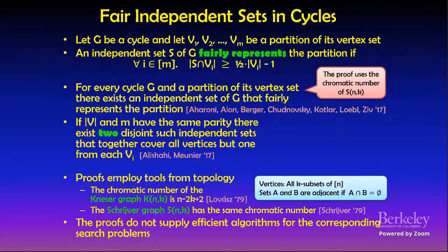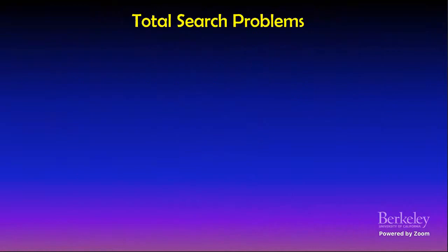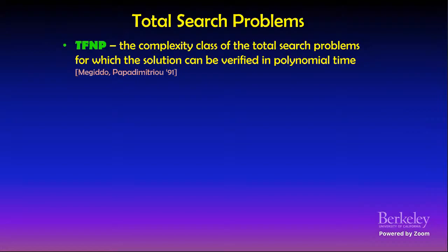One such extension is due to Schrijver, who considered a subgraph of the Kneser graph induced by all k-subsets of {1,...,n} with no two consecutive integers modulo n. He proved this subgraph has the same chromatic number — this subgraph is commonly referred to as the Schrijver graph, denoted S(n,k). The proof of Alon et al. for the existence of a fair independent set is based on the chromatic number of Schrijver graphs.